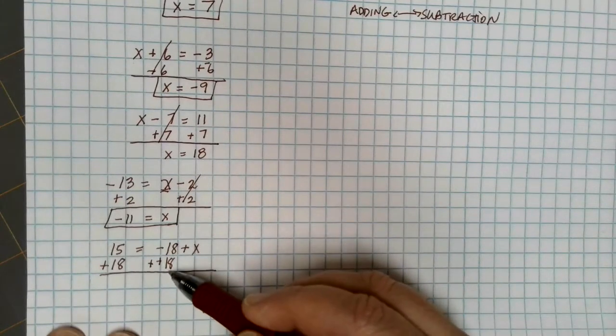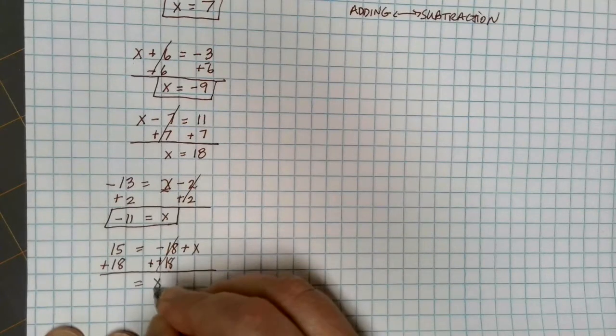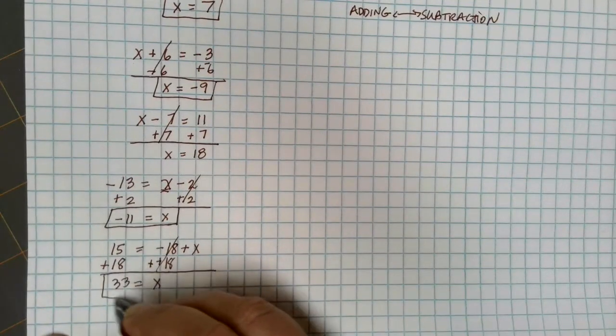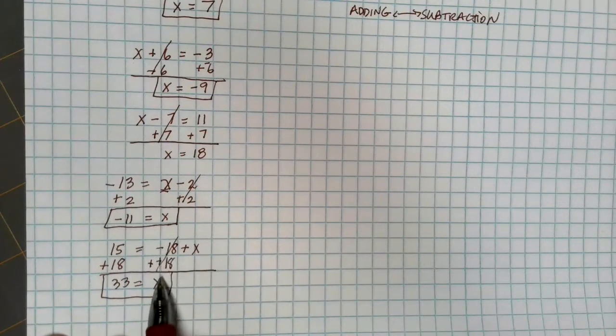So I have a negative 18 and a positive 18 that drops out, and I'm left with x alone, and then I can do the addition on the other side of the equation to come up with my solution. So just be aware that even if we're subtracting a negative, it's the same thing as adding as we get rid of that from both sides.